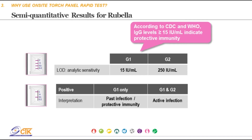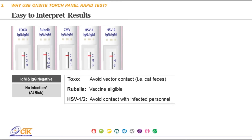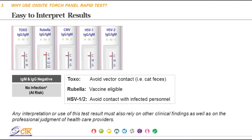The rubella test is also the first test compatible with whole blood specimens. If both IgM and IgG are negative, this indicates the person is at risk of acquiring infection and should take precautionary measures, including avoiding contact with cat fecal matter, getting vaccinated for rubella, and avoiding contact with individuals carrying known infections of CMV, HSV1, and HSV2. Note that any interpretation or use of test results must also rely on other clinical findings and professional opinion.